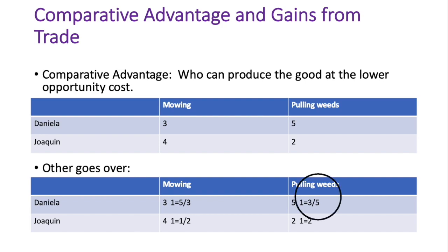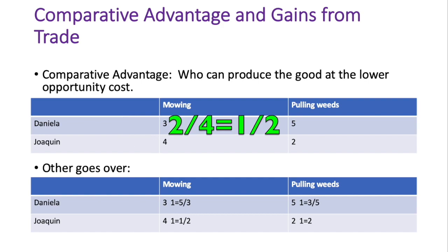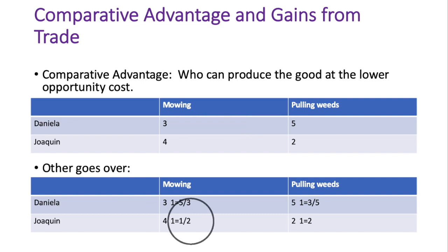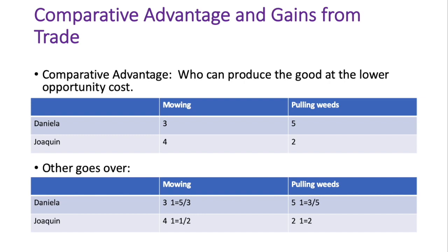For Joaquin, you take pulling weeds over mowing lawns — two over four — which gives you one-half. So one mowing lawn equals one-half bag of pulling weeds. Flipping that fraction gives you one bag of pulling weeds equals two mowed lawns given up — and that two is Joaquin's opportunity cost for pulling weeds.